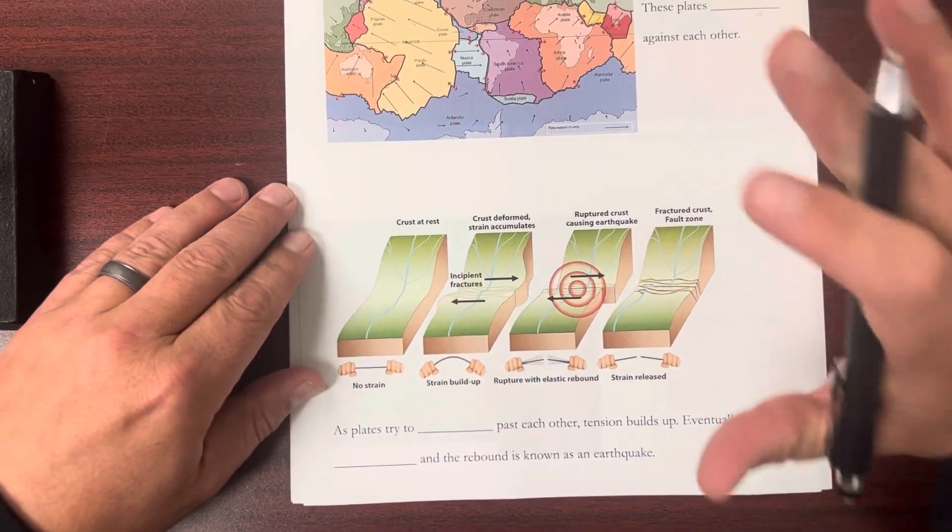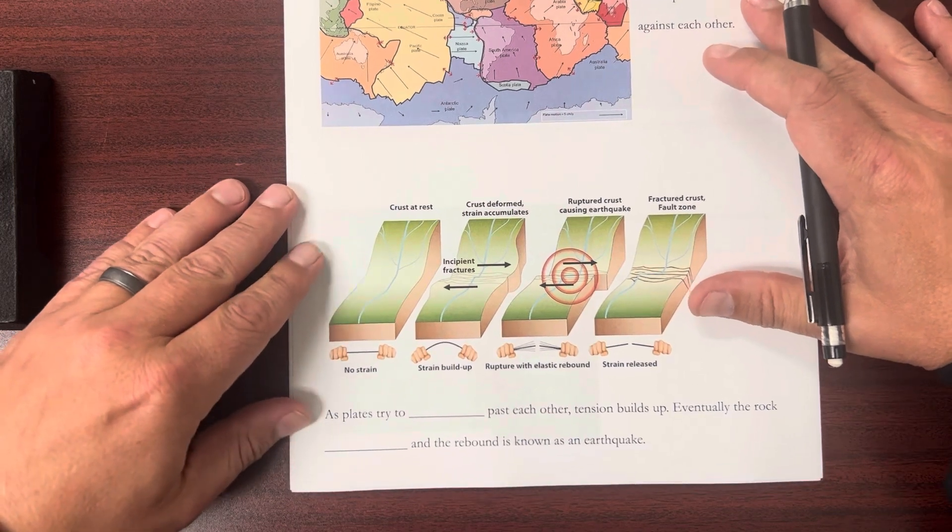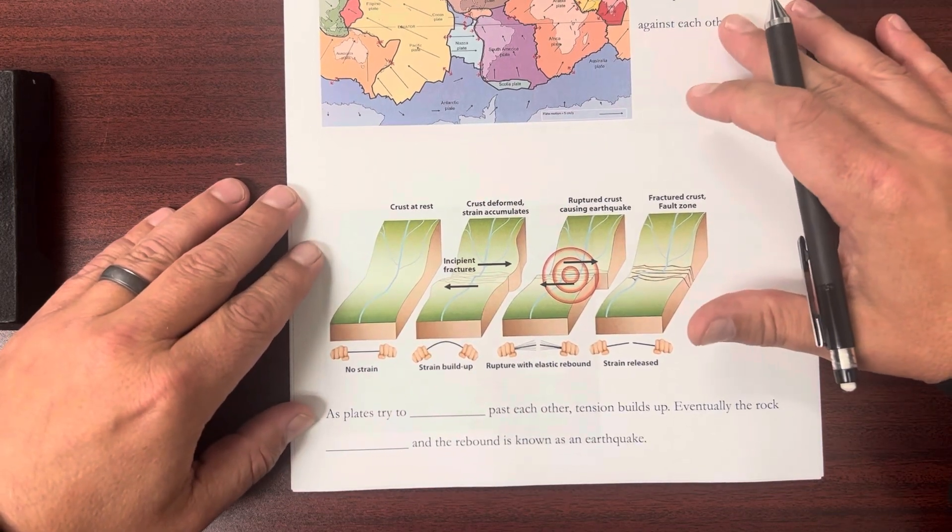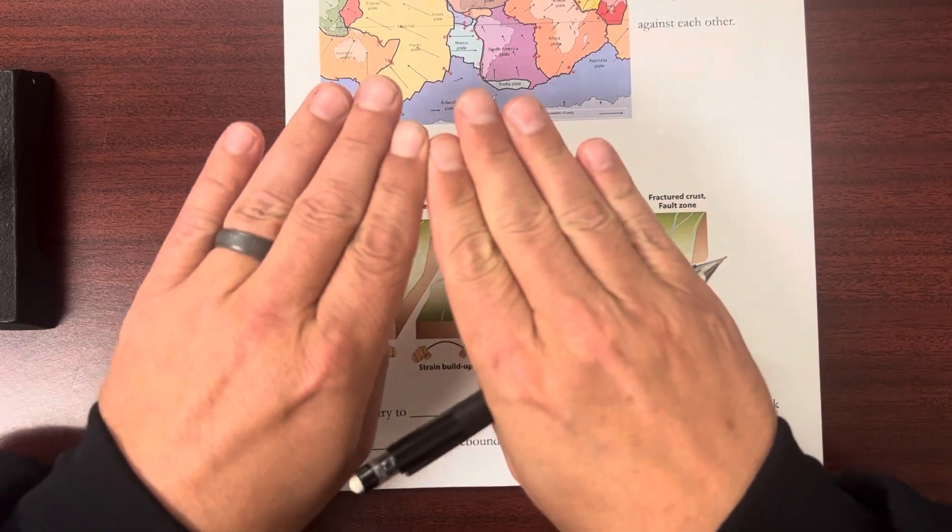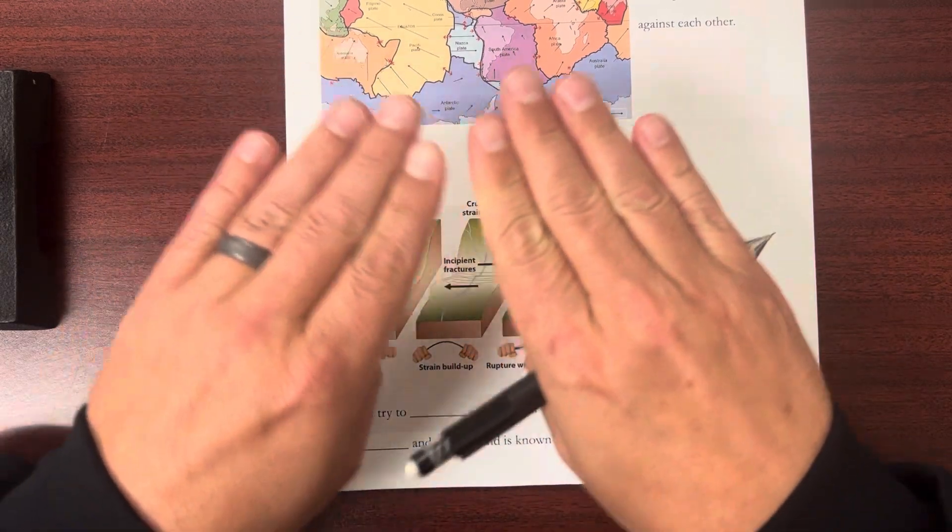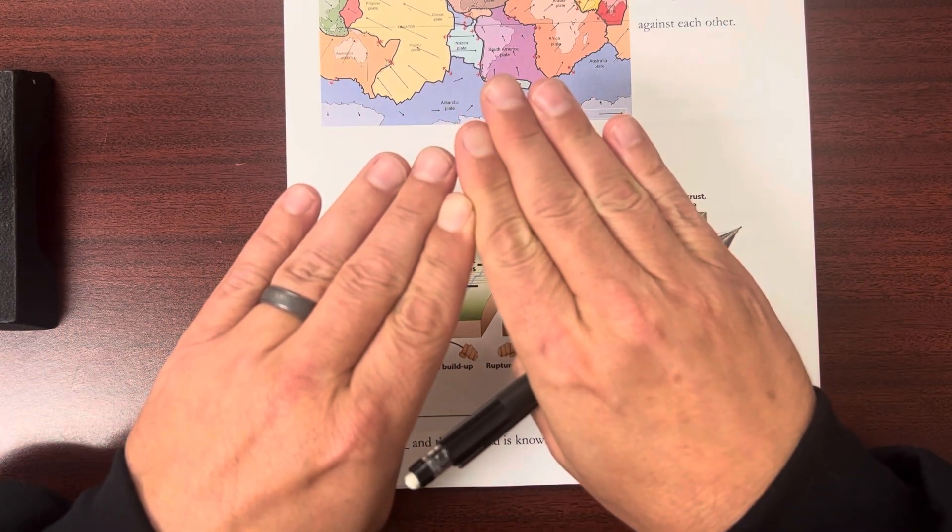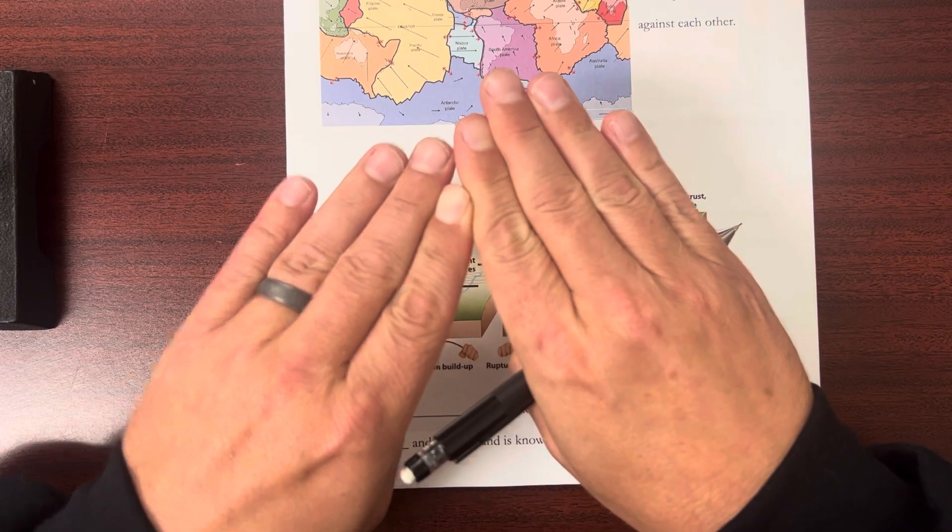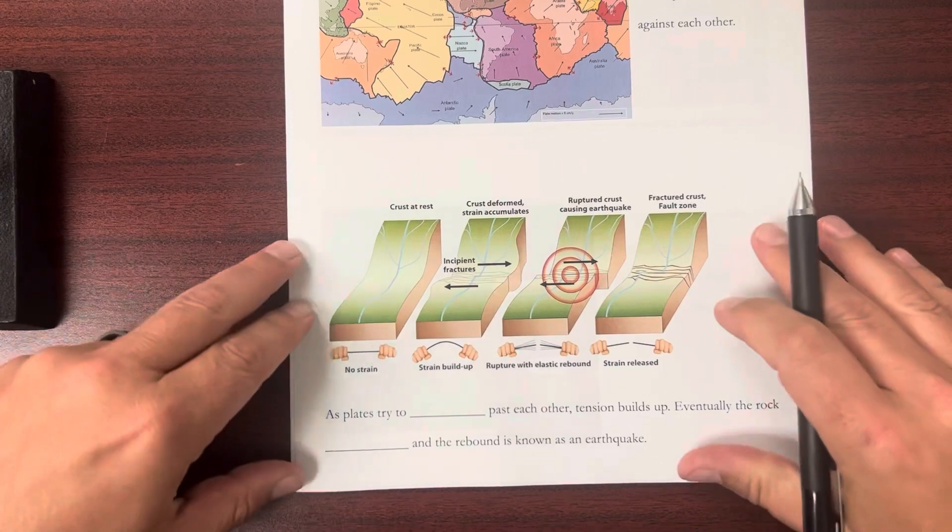Now it's that grinding against each other that is important for earthquakes. Because what happens is tension starts to build up as these plates are touching each other at the border. Tension builds. It doesn't move constantly. They push against each other. Tension builds, builds, builds, builds, and then finally breaks. And it's that break that causes the earthquakes.